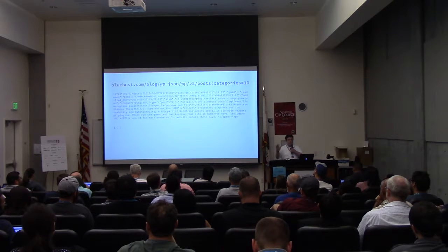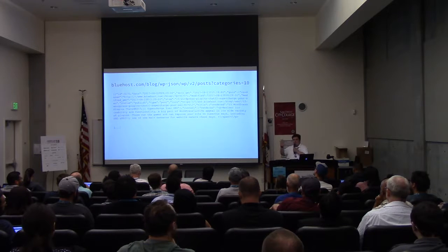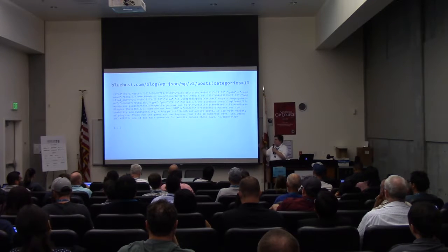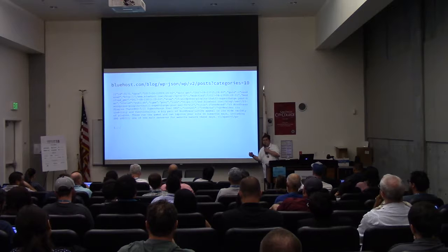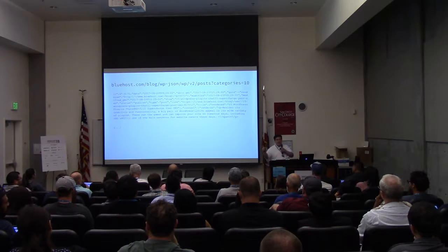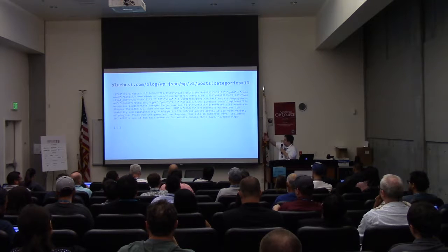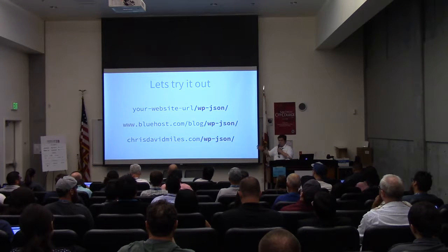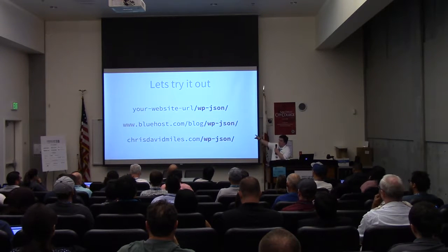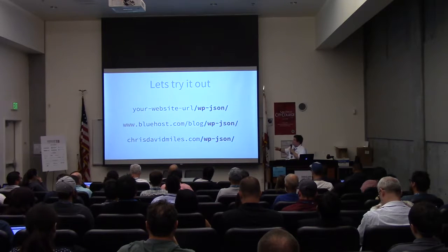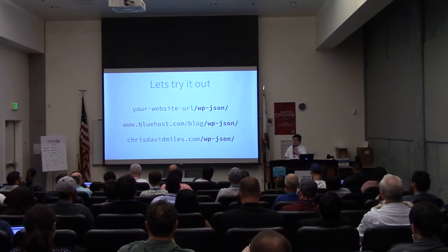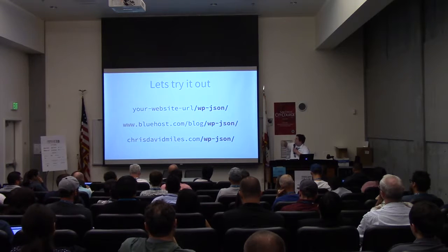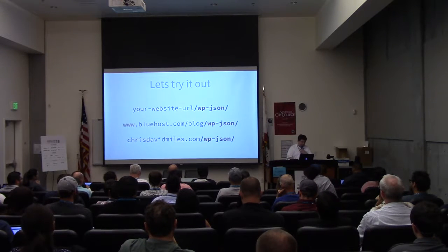Usually, in terms of the REST API, it's not the end of what's happening — it's usually the first half. Anytime you're interacting with the REST API, there's going to be another piece — a client, an app — something else is going to be digesting this. If nobody's ever tried it before, just go to your WordPress website and add WP JSON to the end of the URL. Your browser will do a GET request and come back, and you'll see all of the endpoints that are available.